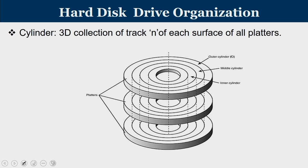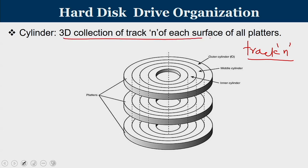The cylinder concept: if you take track N of all the platters, that collection is known as a cylinder. It is a 3D collection of track N across all surfaces. When writing on track 3 of one surface, the remaining data is not stored in the adjacent track but on the same track of a different platter, so the head does not need to move. The set of all tracks of the same number across all platters is called a cylinder, which is a 3D concept.